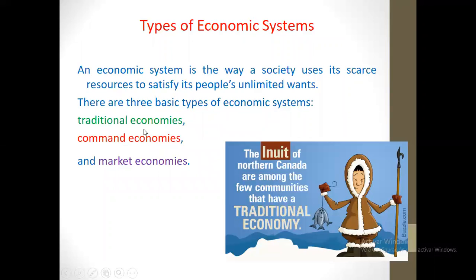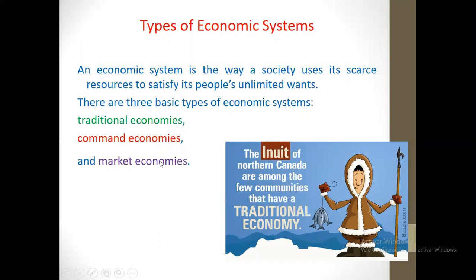There are three basic types of economic systems — there are more, but these are the ones we are going to study. They are the traditional ones: traditional economy, command economy, and market economy. The first one, traditional economy, as the name says, begins at the beginning of the ages. A traditional economy is an economic system in which families, clans, or tribes make economic decisions based on customs or beliefs that have been handed down from generation to generation.